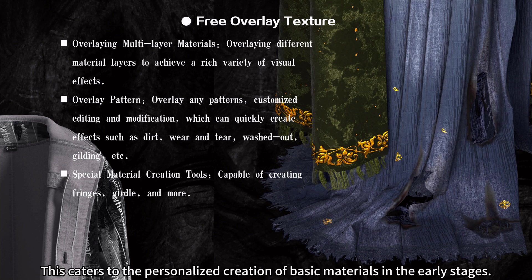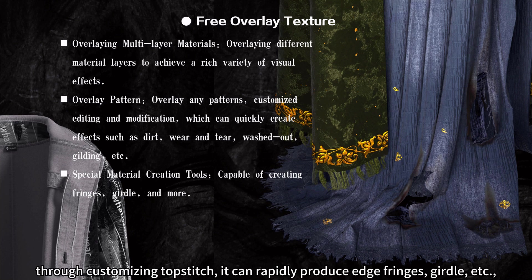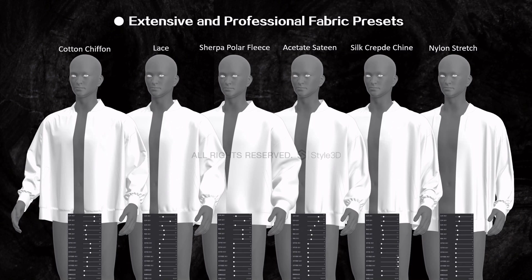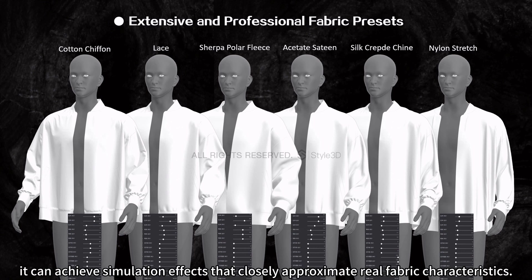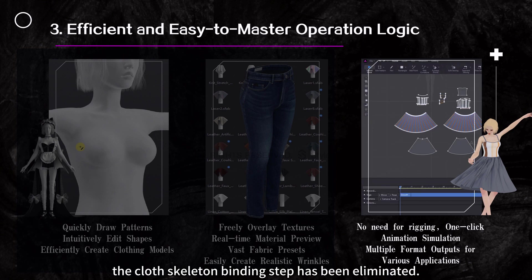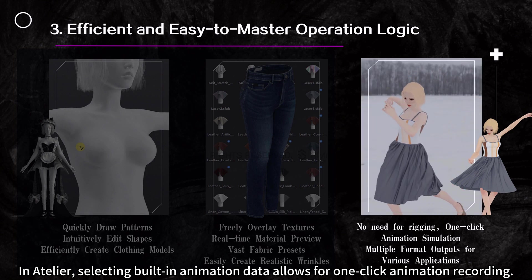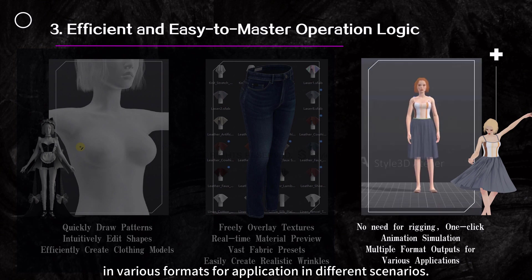The software also possesses special material creation tools — through customizing topstitch, it can rapidly produce edge fringes, girdle, etc., without the need to manually draw on each pattern piece. It has extensive and professional fabric presets: by measuring the physical properties of fabrics with professional equipment, it can achieve simulation effects that closely approximate real fabric characteristics. Finally, in terms of data output, the cloth skeleton binding step has been eliminated. In Atelier, selecting built-in animation data allows for one-click animation recording, and the animation data can be output in various formats for application in different scenarios.